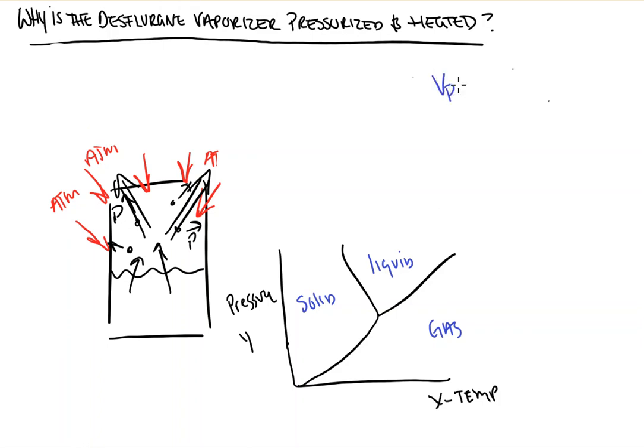So, if we look at desflurane, which has a vapor pressure of about 660 millimeters of mercury, this approximates our atmospheric pressure, which is about 760 millimeters of mercury. And, like we just discussed,